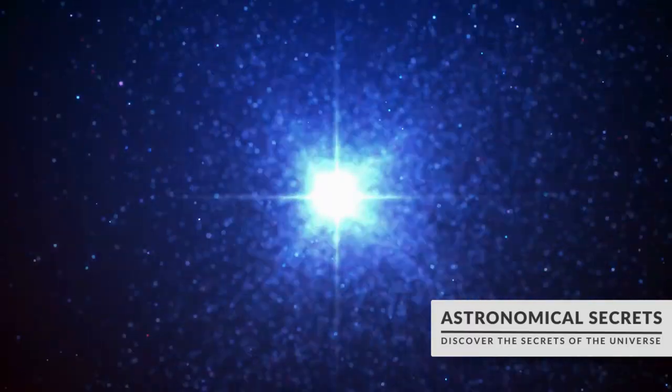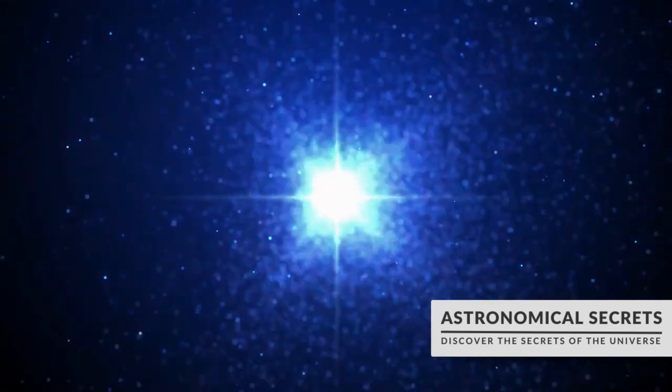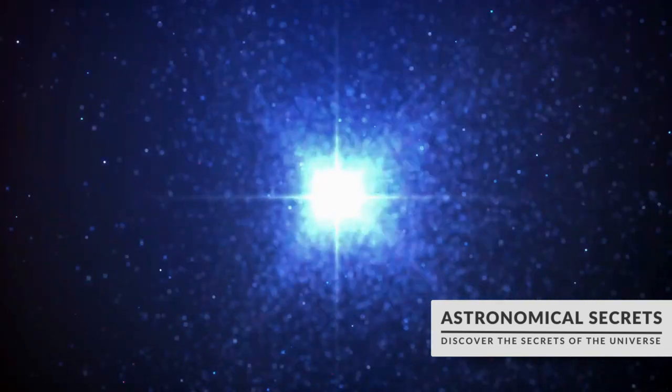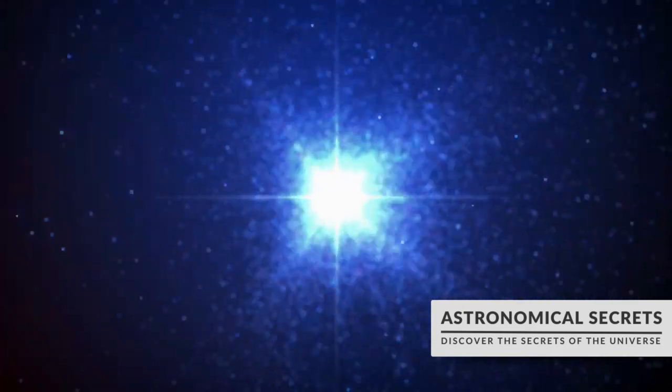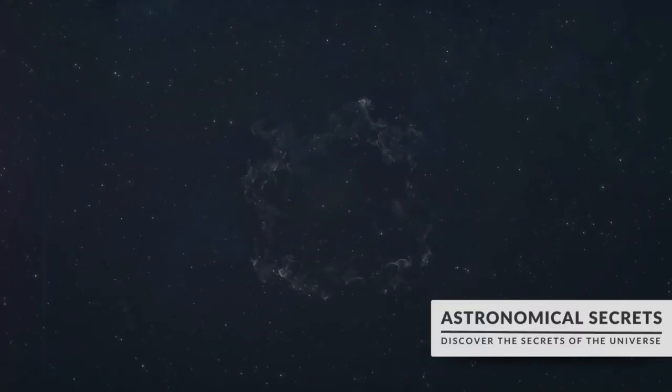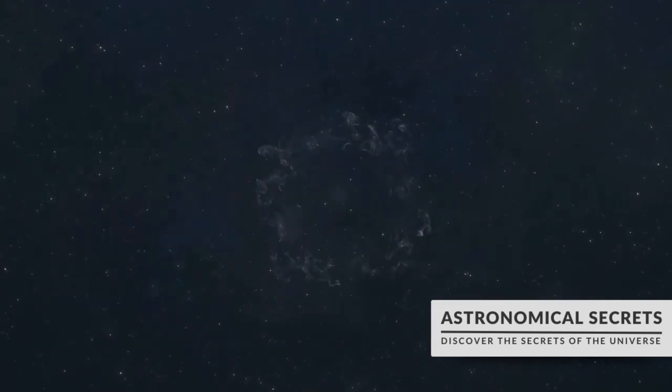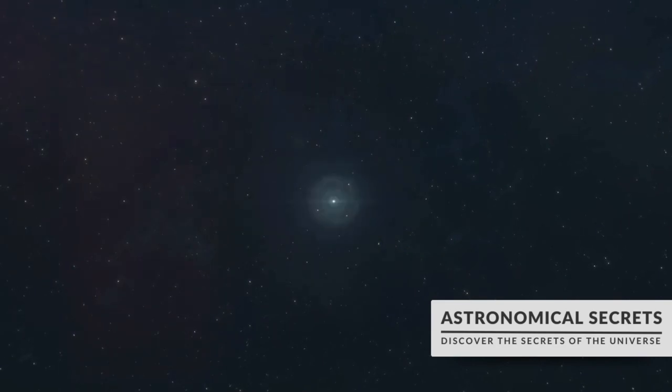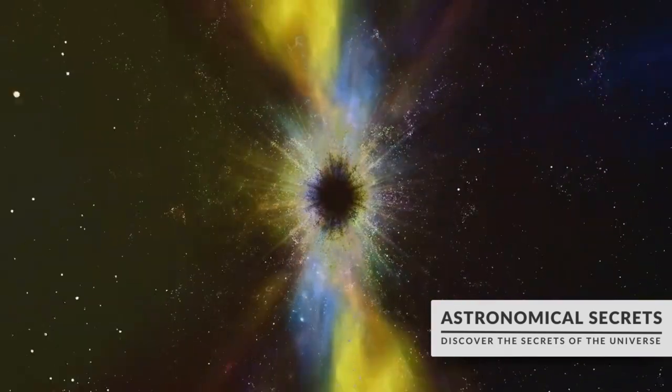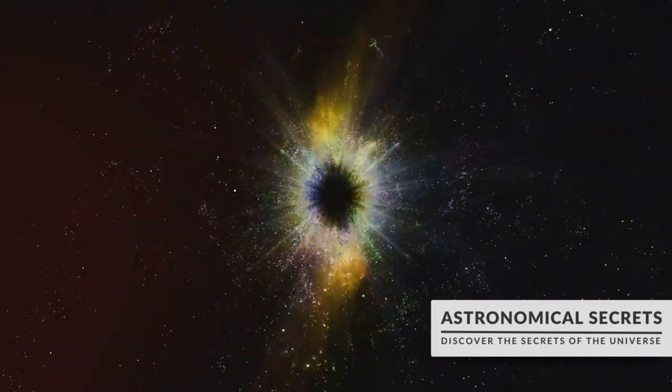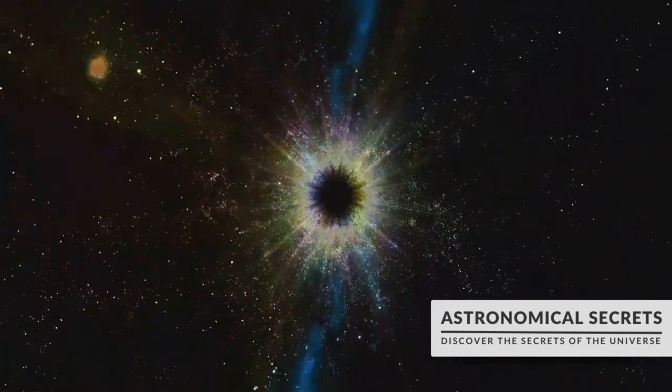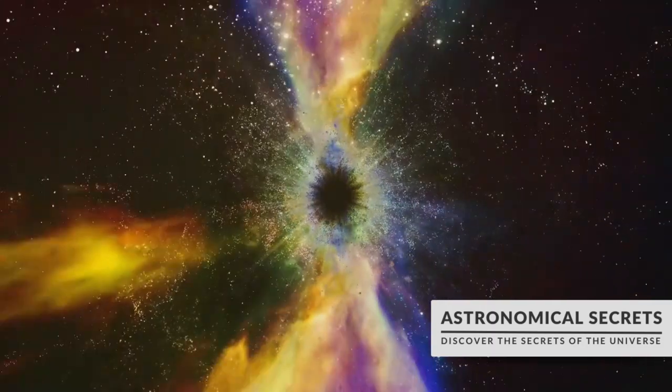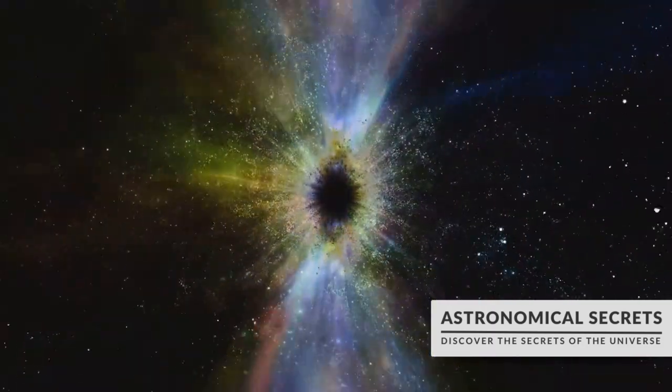If a magnetar was located halfway to the moon, it could strip the credit card information right out of your wallet. That's about 186,000 miles away. But what's the source of this extraordinary magnetic prowess? The answer lies in the birth of a neutron star. When a massive star collapses under its own gravity during a supernova explosion, its core gets squeezed, intensifying its magnetic field. If the newly formed neutron star spins rapidly enough, this magnetic field can increase exponentially, giving birth to a magnetar.